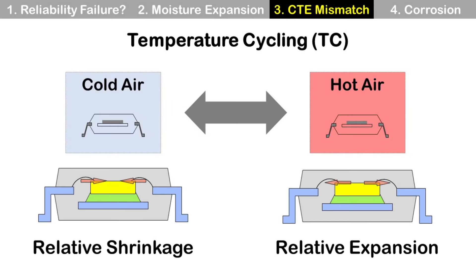Here is temperature cycling. During temperature cycling, the package is exposed to cold air and hot air alternatively, so the package experiences relative shrinkage and relative expansion for different materials. This stress will finally cause failure.